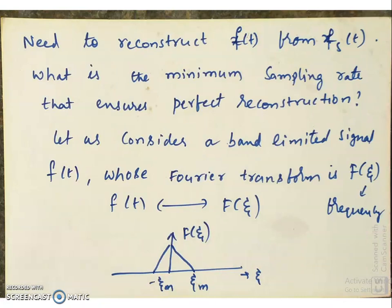The whole idea here is to get the signal and represent it using minimal memory, which enables us to send the signal with minimum bandwidth. At the receiver, we have to go back to the original signal F of t. So F of t to Fs of t is sampling, and Fs of t to F of t we should be able to reconstruct. What is the minimum sampling rate that ensures perfect reconstruction? This is very important. If F of t cannot be recovered from Fs of t, then the sampling is not valid — our signal is lost, the information is lost.